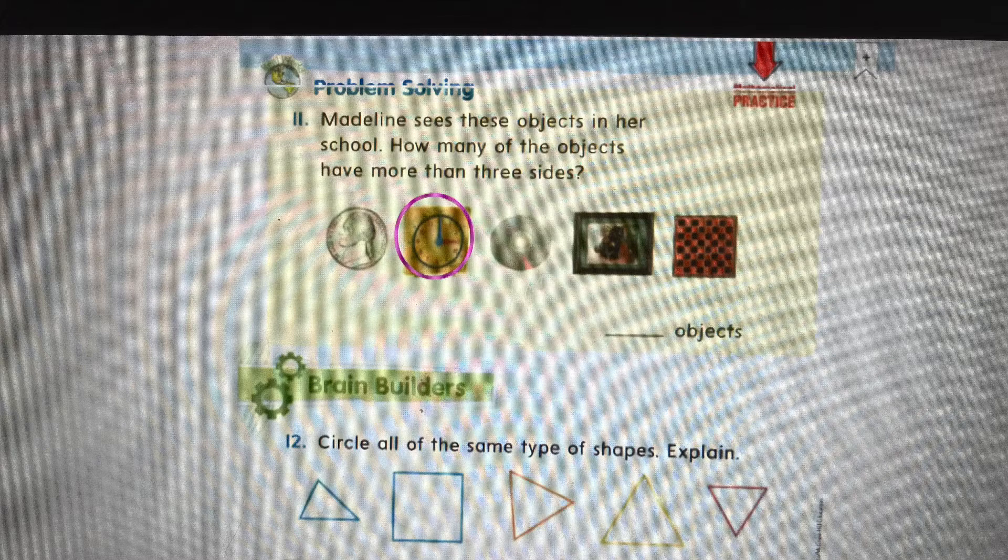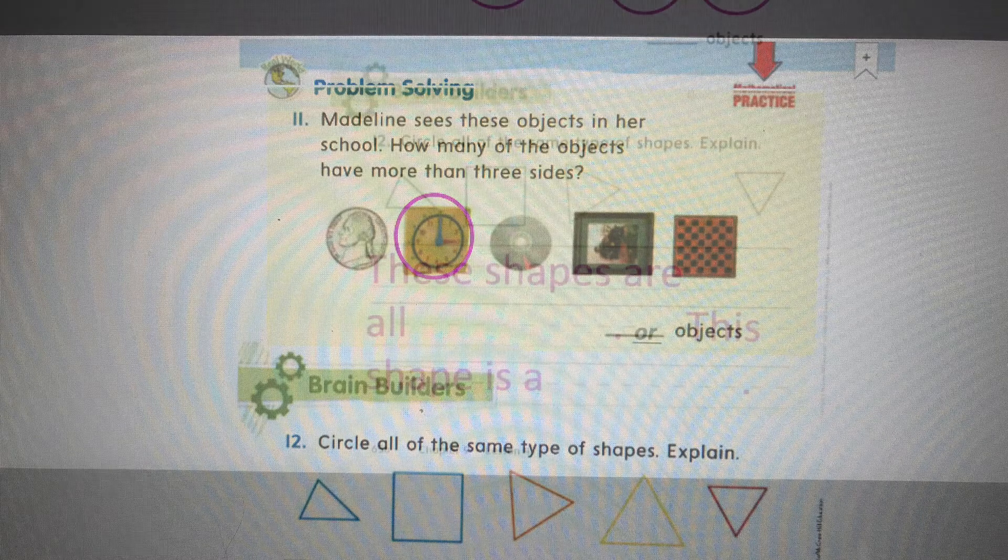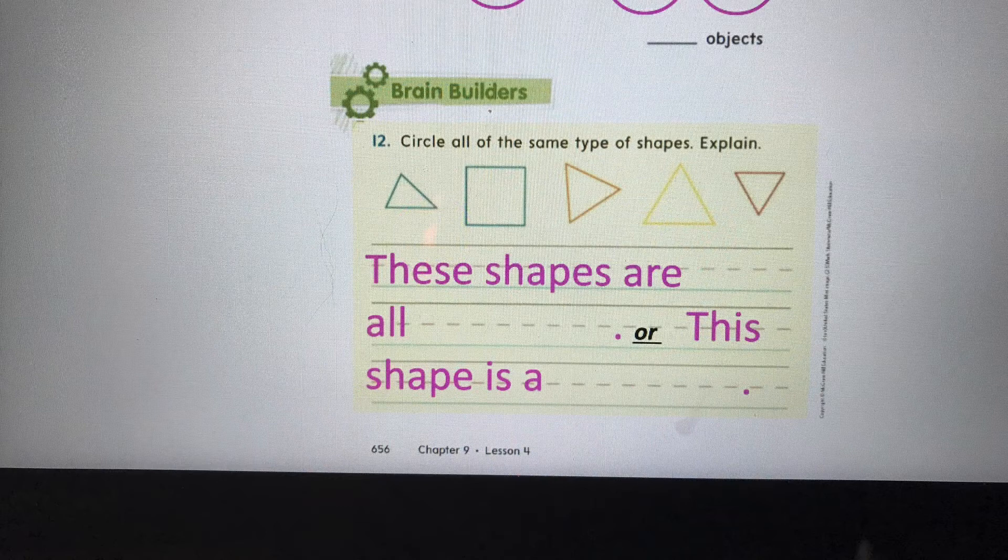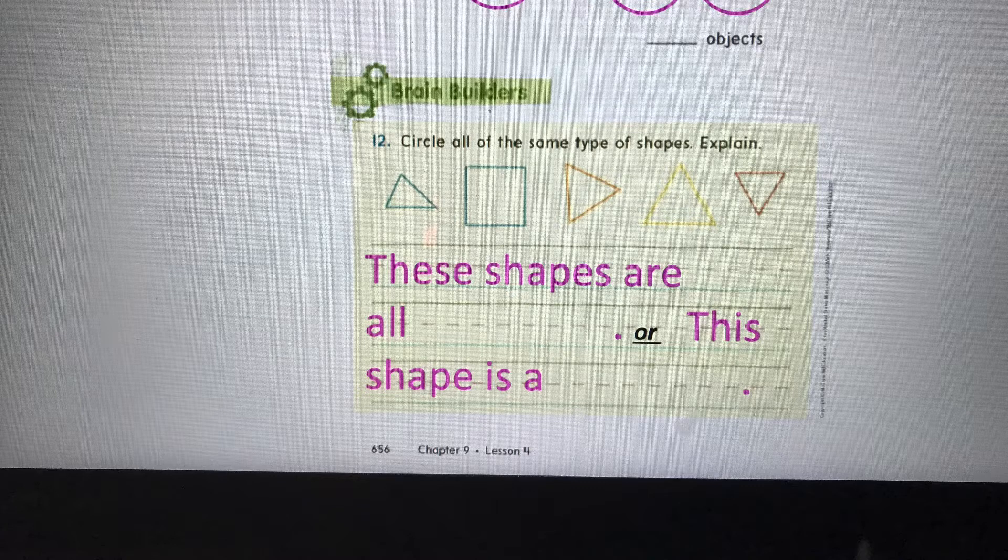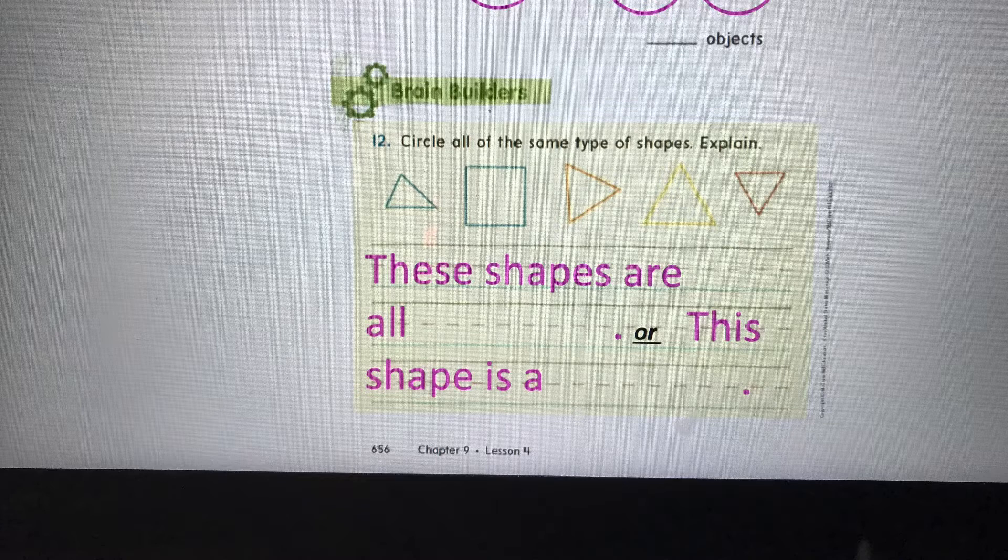Problem 12. Circle all the same type of shapes, and then explain your answer. You can stop and pause the video to write down the same sentences you see on my paper. It says, these shapes are all blank. Or you could write, this shape is a blank. Go ahead and figure out how to compare.